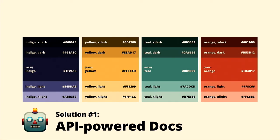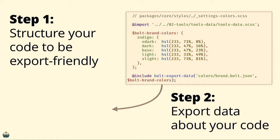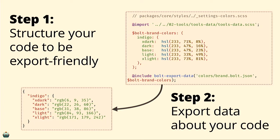Goals are great, but practically we need to solve these with real-world examples. For starters, let's talk about API-powered documentation. Step one: make your code exportable. For example, we're using a Sass map to structure our color palette as a single group of related data. Step two: export that data. We use Webpack for our build process. We added a custom function to Sass to take this structured data and spit out a JSON file with all the color palette information.